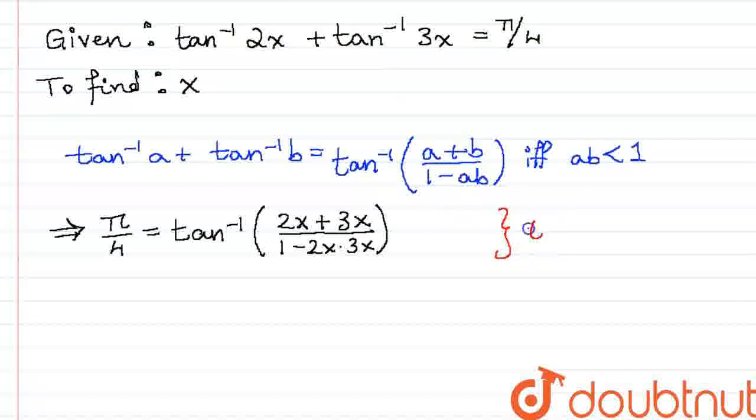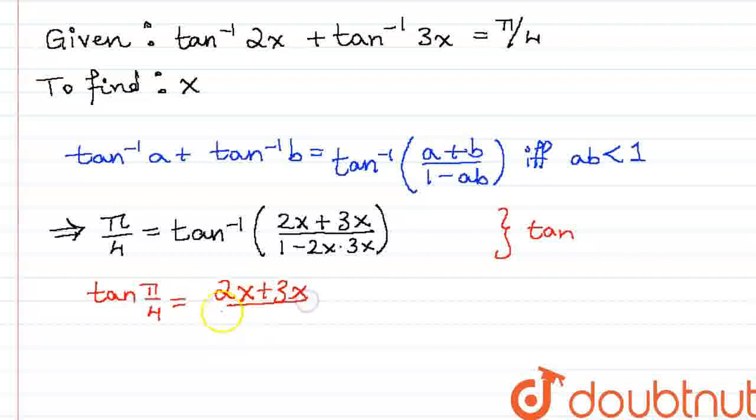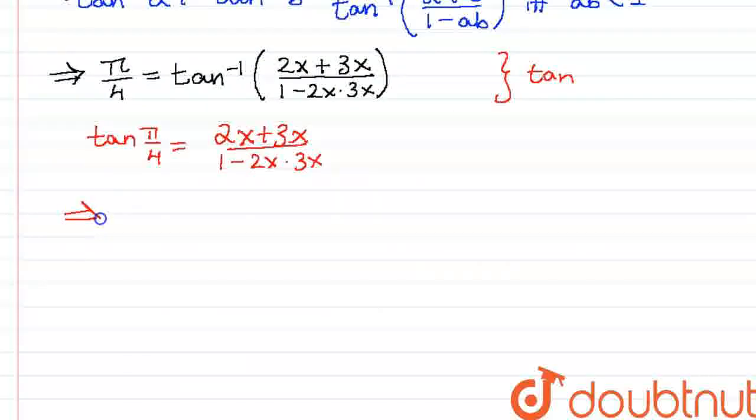If we take tan, then we get that tan pi by 4 is equal to tan and tan inverse cancel. It will be equal to 2x plus 3x by 1 minus 2x into 3x. Simplifying this entire expression, we get 1 is equal to 5x by 1 minus 6x squared.